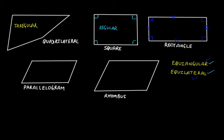In this case we have a parallelogram. We know that in a parallelogram opposite sides are equal to each other and parallel. This side will be equal to the opposite one and parallel, but not all angles are equal to each other — the angles are not equal to each other.